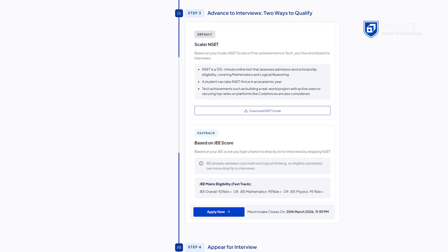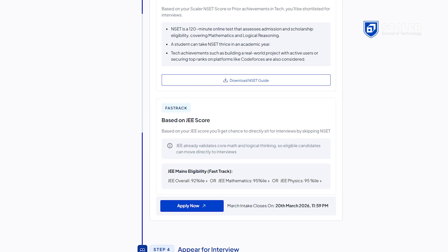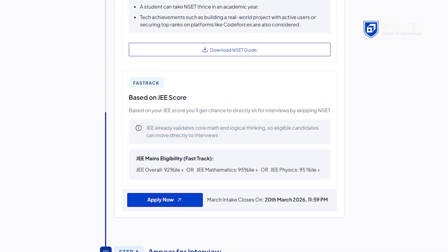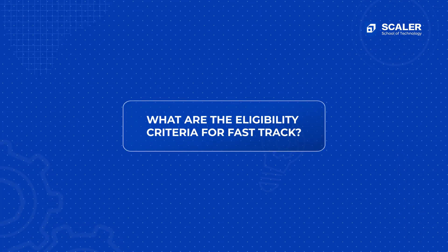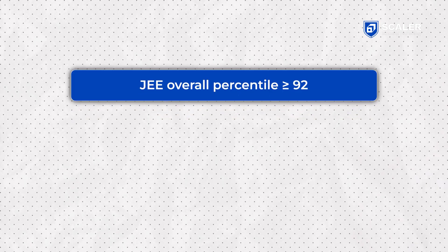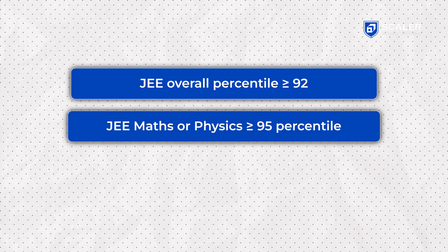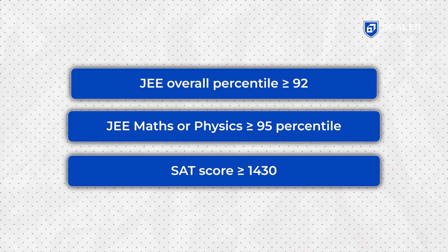While filling the application form, we ask you these details and the application module will tell you if you are eligible for fast track or not. The criteria are: 92 percentile and above in JEE Mains, 95 percentile and above in JEE Advanced in maths and physics only, or 1430 and above in SAT.